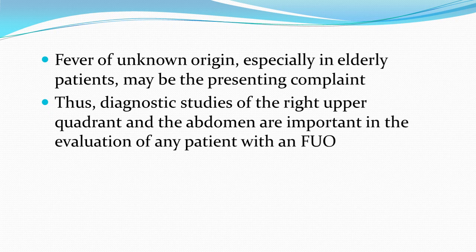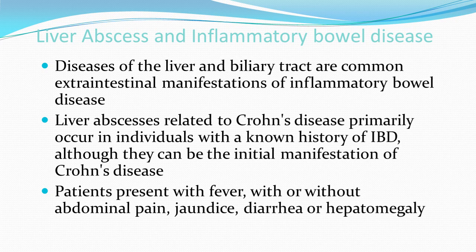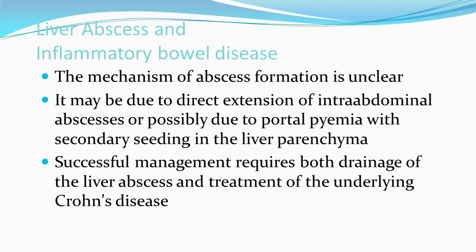Fever of unknown origin, especially in elderly patients, may be the presenting complaint; therefore, diagnostic studies of the right upper quadrant and abdomen are important in evaluating patients with pyrexia of unknown origin. Diseases of the liver and biliary tract are common extra-intestinal manifestations of inflammatory bowel disease. Liver abscess related to Crohn's disease primarily occurs in individuals with a known history of IBD, though it can be the initial manifestation. Patients present with fever, abdominal pain, jaundice, diarrhea, and hepatomegaly. Successful management requires both drainage of the liver abscess and treatment of underlying Crohn's disease.